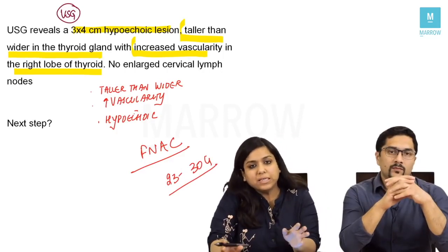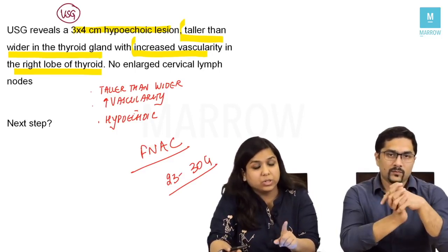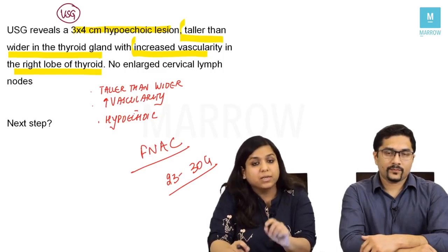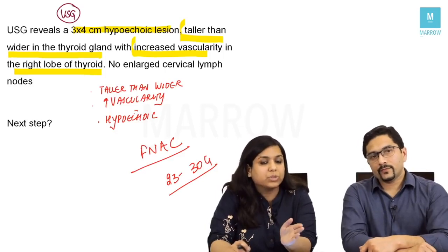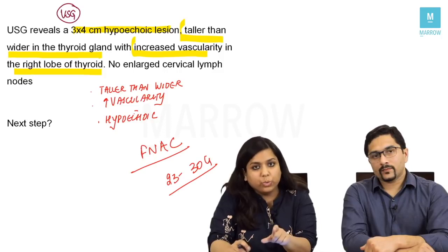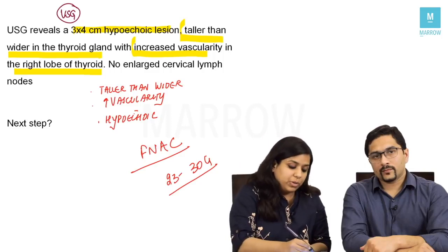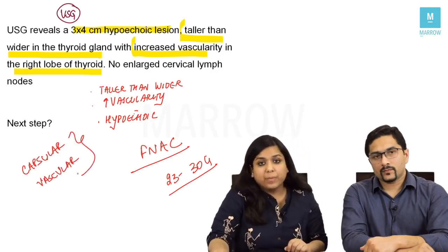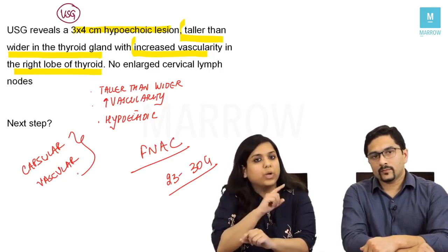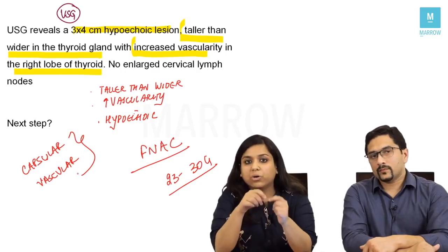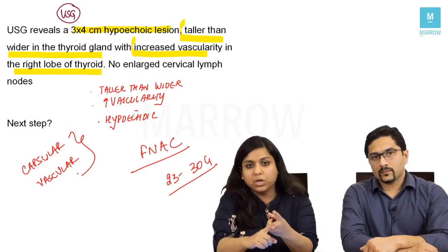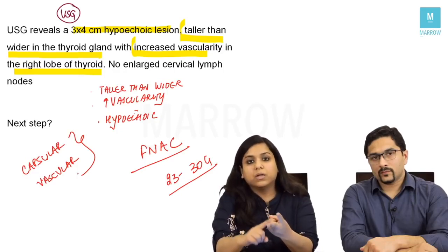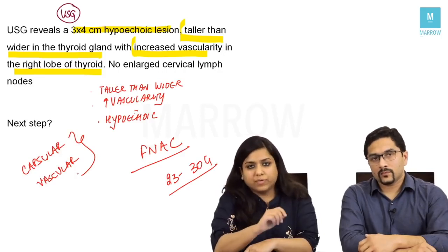FNAC is the investigation of choice for all thyroid lesions except one — follicular carcinoma of thyroid, which is very commonly asked in exams. The reason is that follicular carcinoma has a benign counterpart called follicular adenoma. To differentiate between the two, a pathologist must look for capsular and/or vascular invasion. When doing FNAC, we are neither taking the capsule nor the blood vessels out, so you cannot see capsular or vascular invasion — therefore FNAC cannot differentiate a follicular adenoma from a follicular carcinoma.